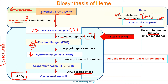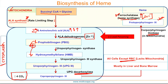Two important exam points: first, heme can be synthesized by almost all tissues — the only exception is red blood cells, as they lack mitochondria. Second, heme synthesis primarily takes place in the liver and bone marrow.